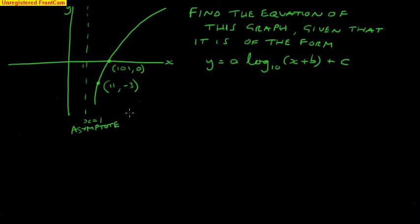I'm going to start by looking at the asymptote. There is an asymptote at x equals 1, and that's telling me that if I had started with a curve y equals log to base 10 of x, it has been moved 1 to the right, which is telling me the part in the bracket here. Therefore, y equals a log to base 10 of x minus 1 plus c.